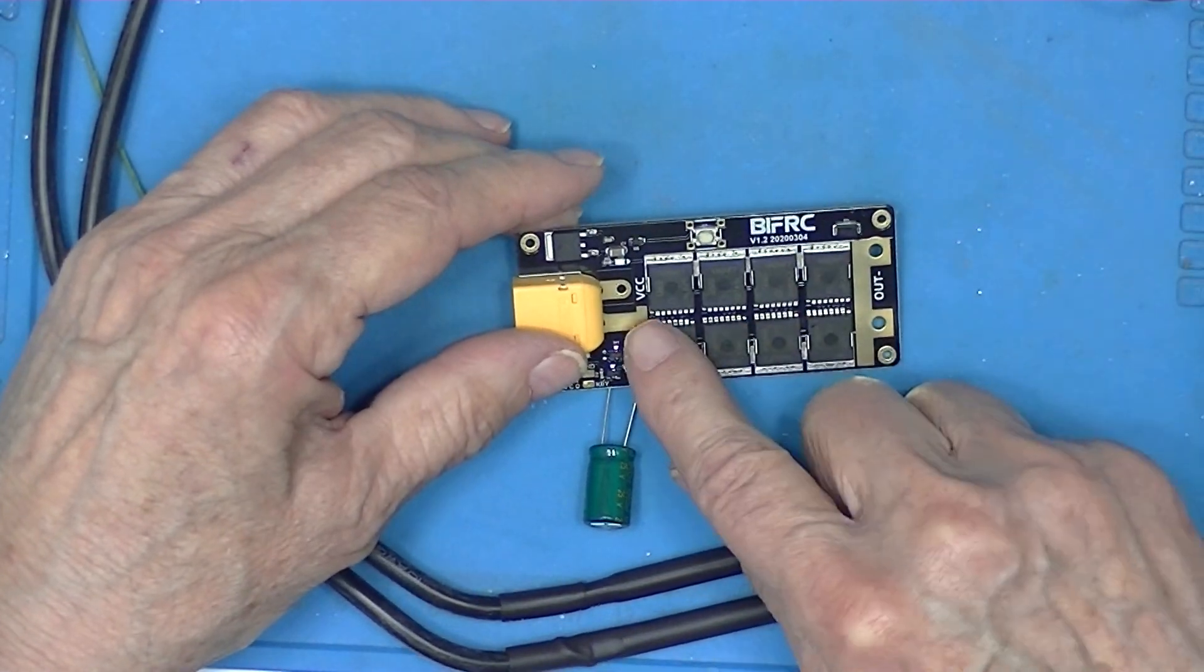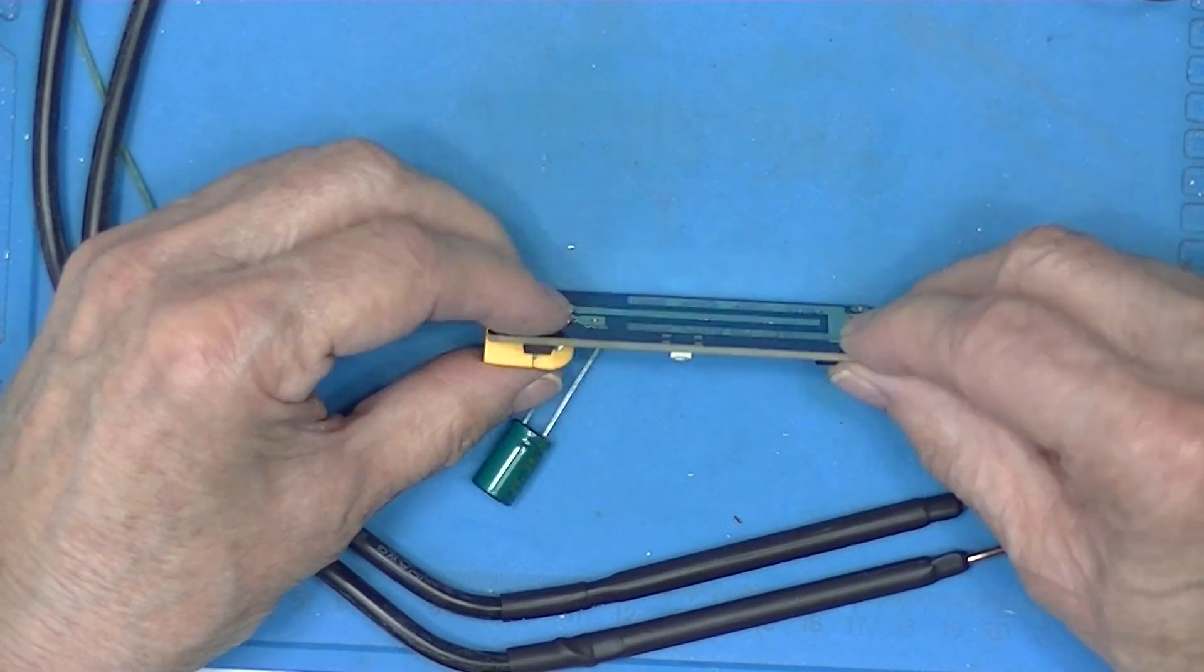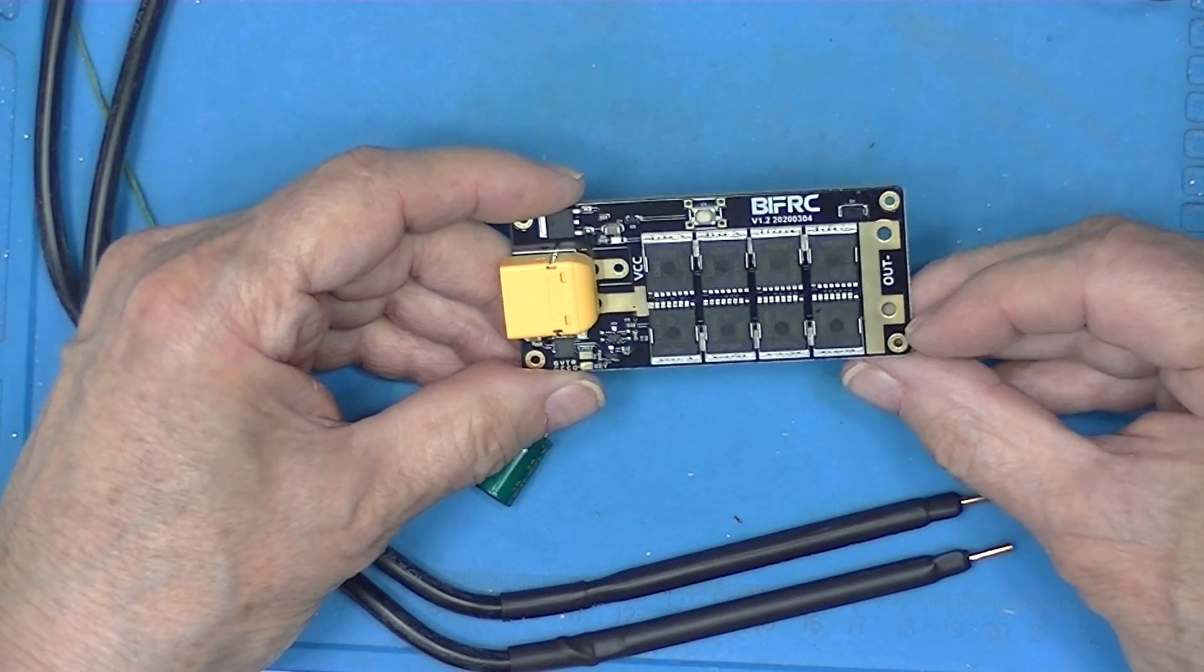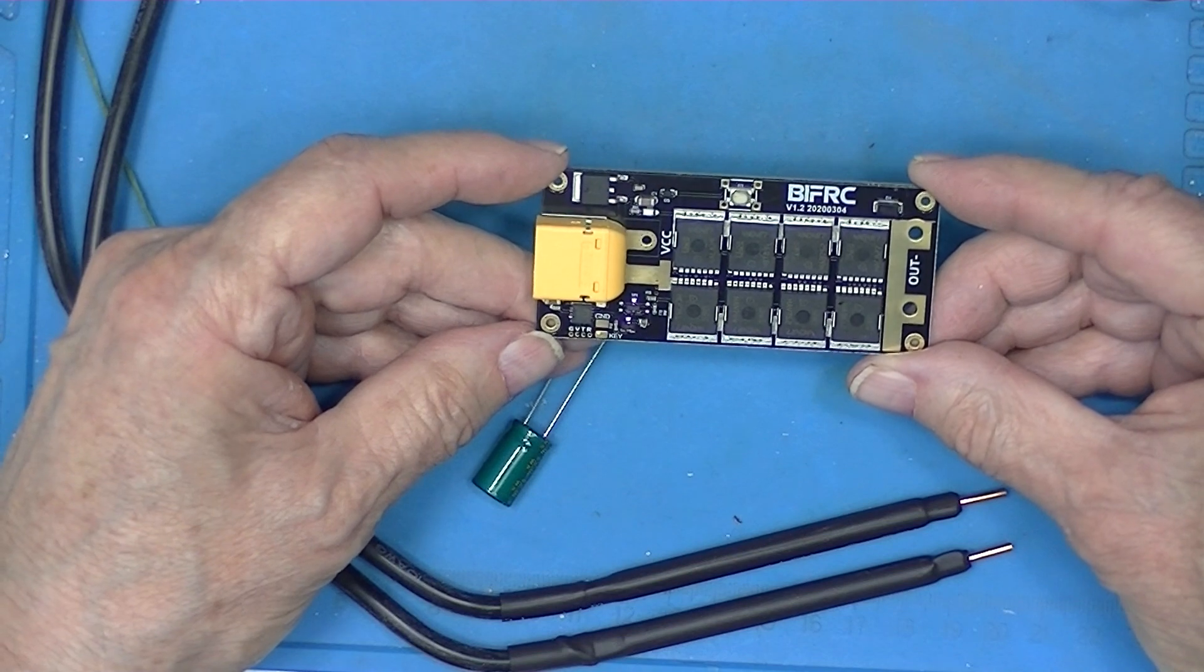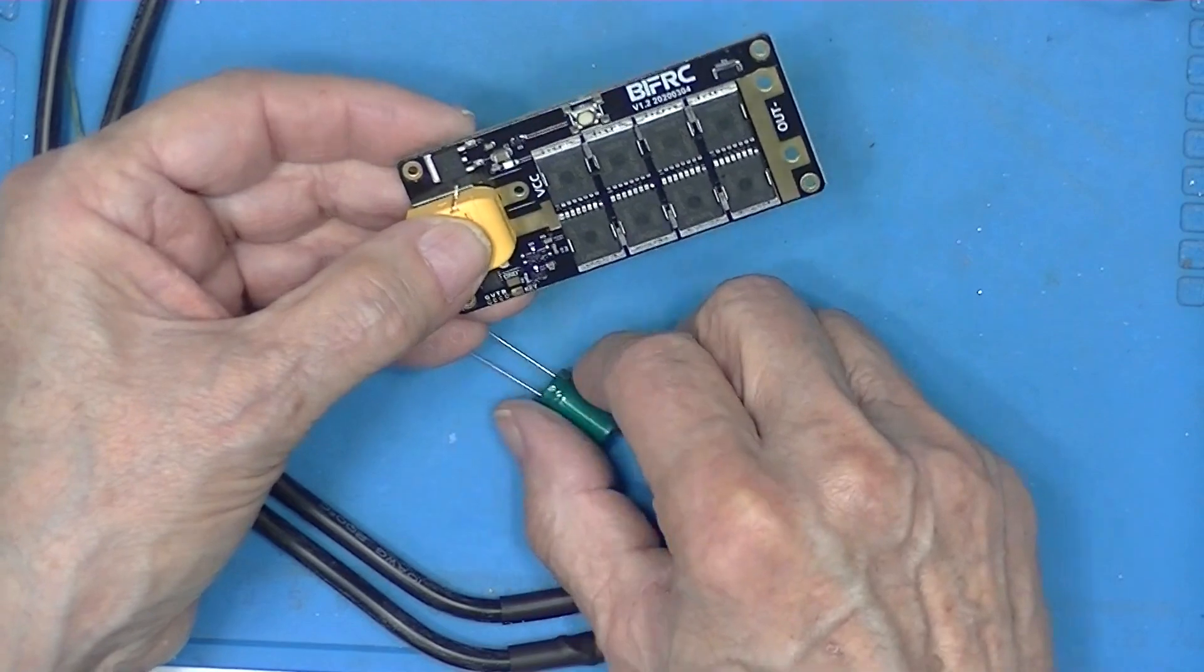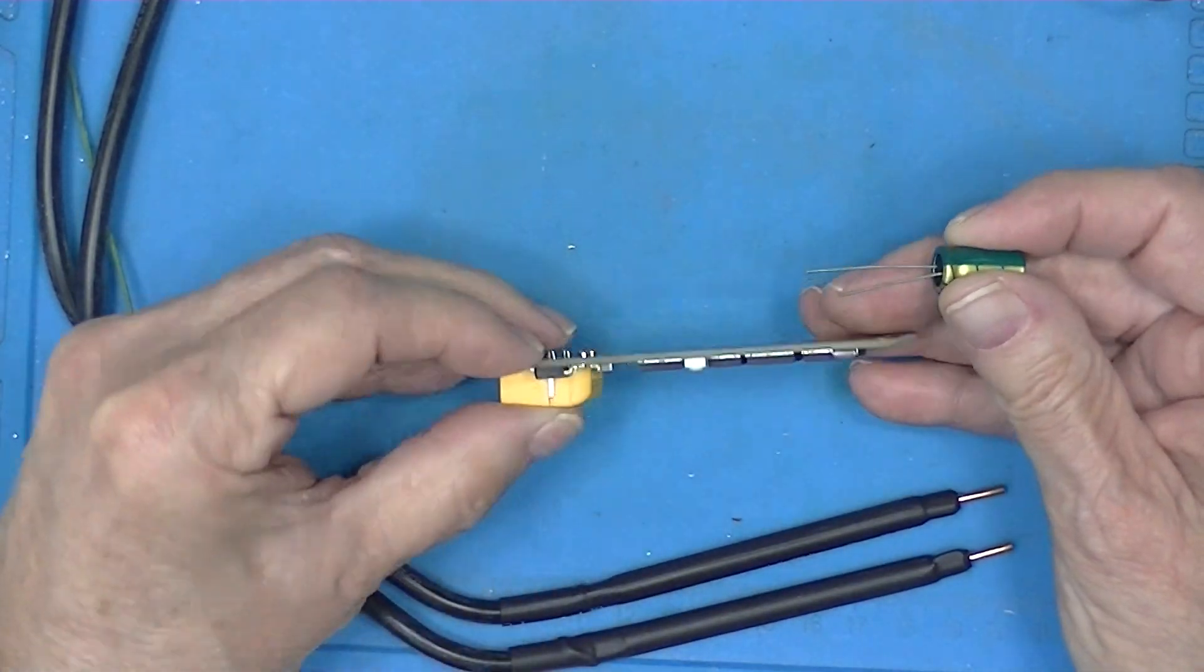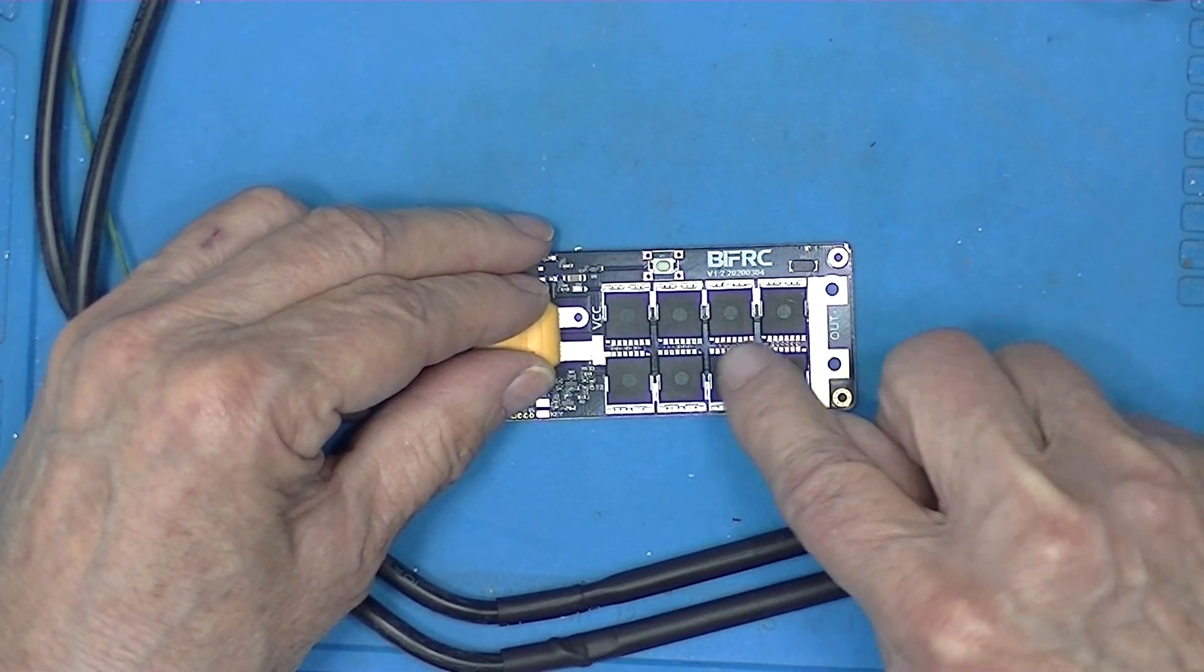Then we have a VCC and an out. Eight MOSFETs, looks like number two standoff holes that is for a number two standoff and no holes to accept the filter capacitor. So we have two outs but they're obviously common and we have a VCC.